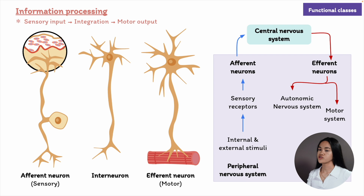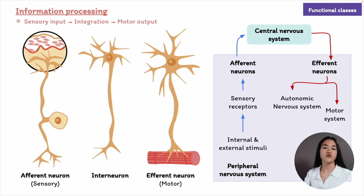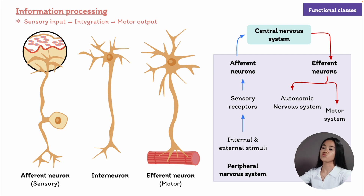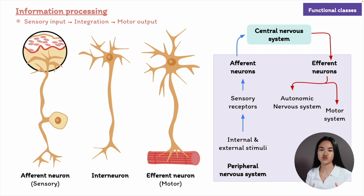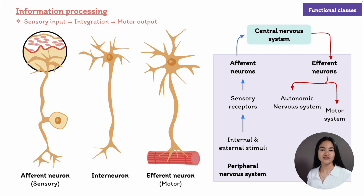After that, the interneurons will interact with the efferent neurons, or motor neurons, sending messages down the spinal cord and out towards the muscles to tell them to move in a certain way — it's going to start a certain action. In this example, pulling my hand away from the burning cup of coffee.